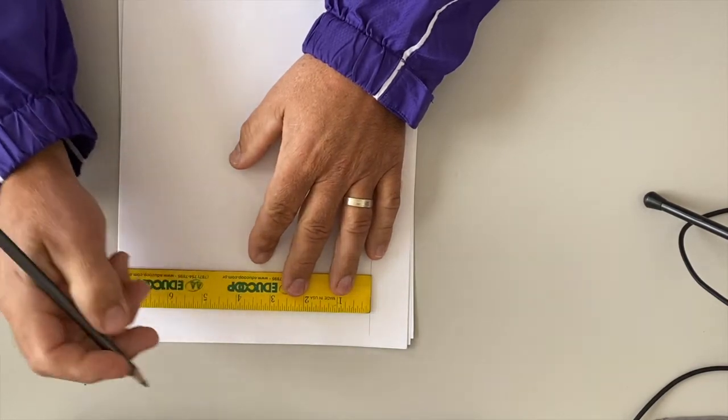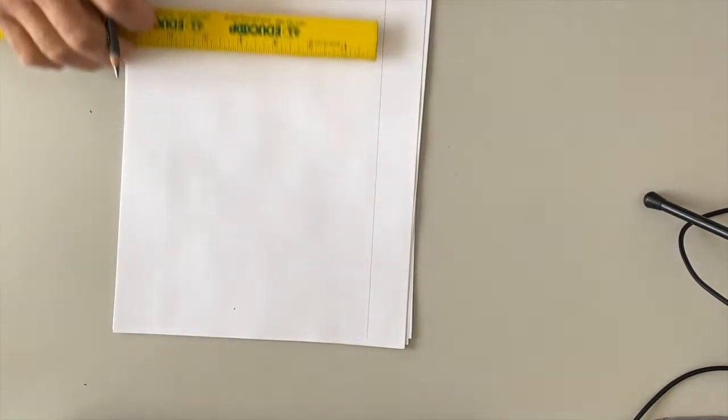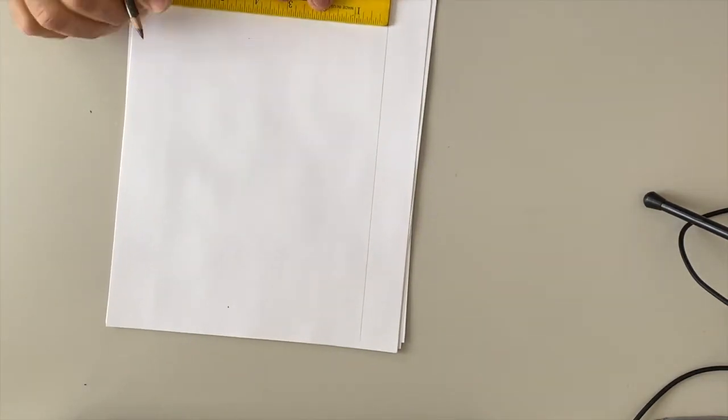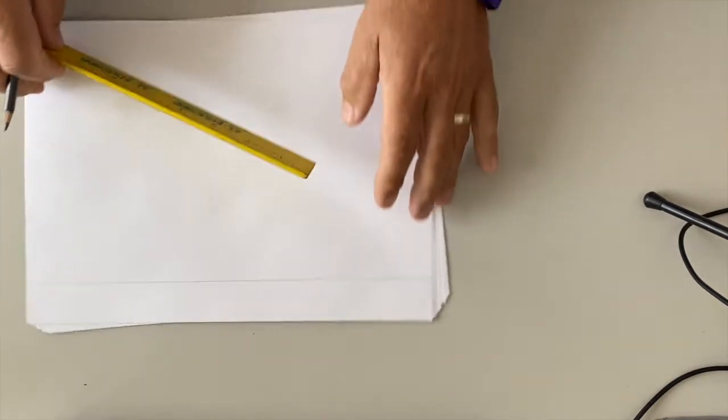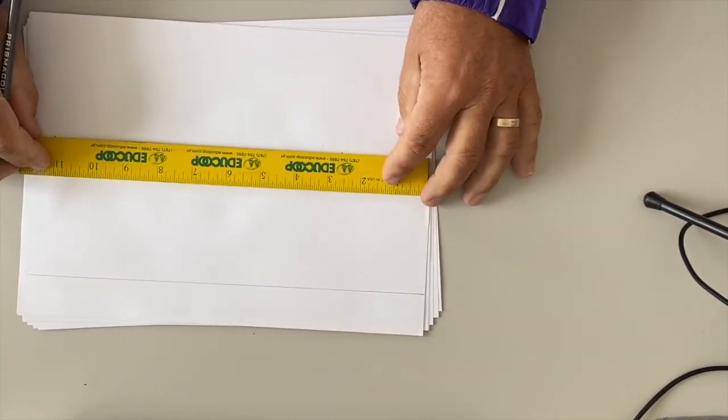What I want to do is I drew a line parallel. I'm going to mark over here four inches and make a mark. And I'm going to come over here and make a mark at four inches. Why do I make a mark on both sides? Because for this to be accurate and to be straight, I need to measure both sides.